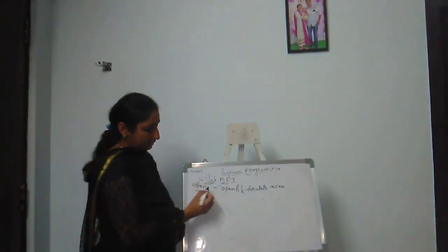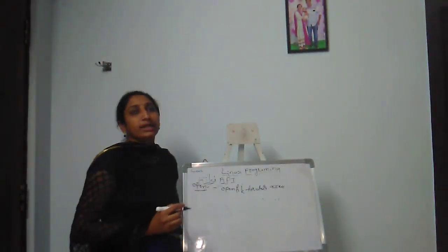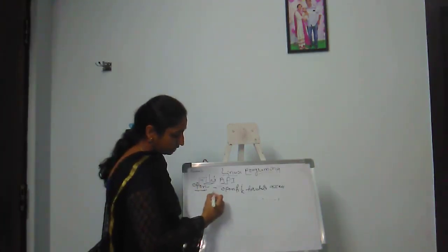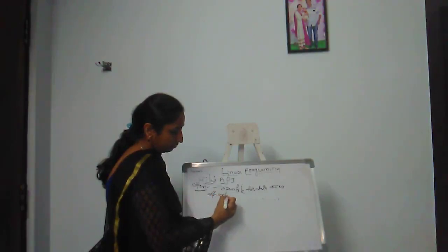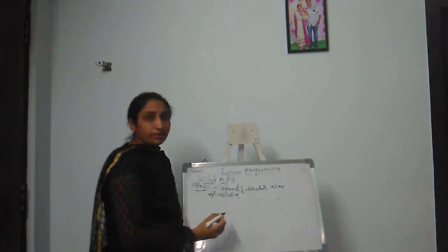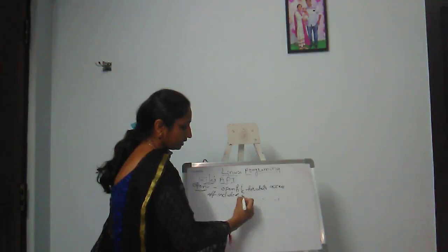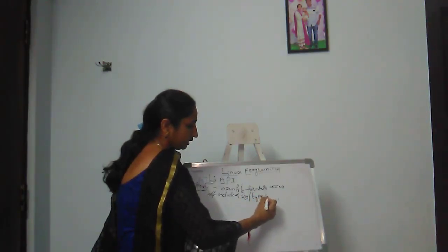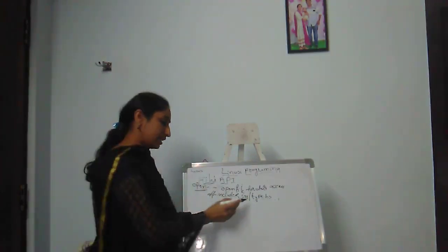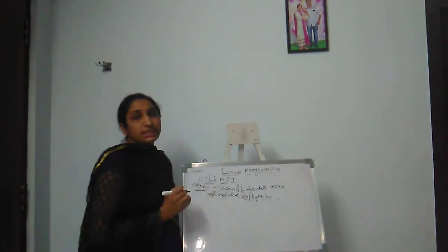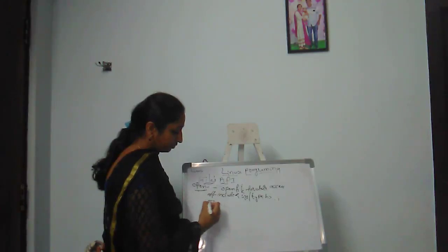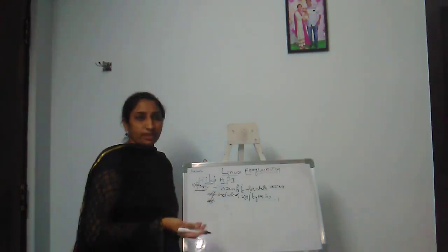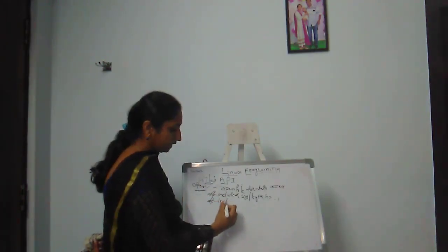This is the open system call. We have the code with the header files: hash include unistd.h and hash include sys/types.h. These header files are required when you are going to access a file.